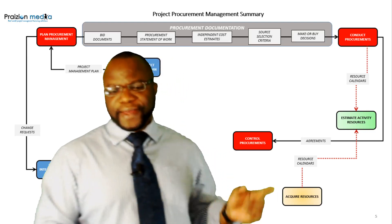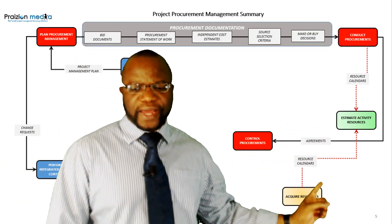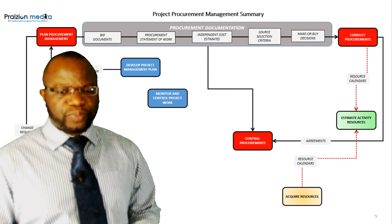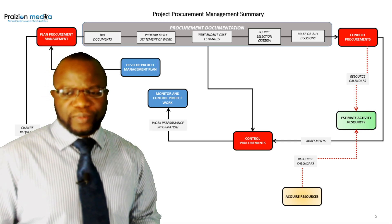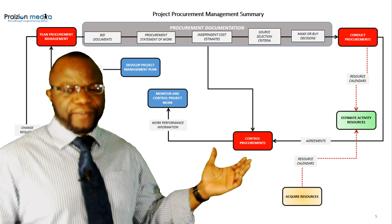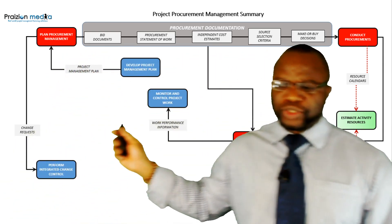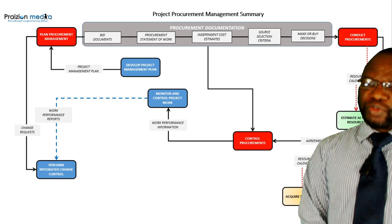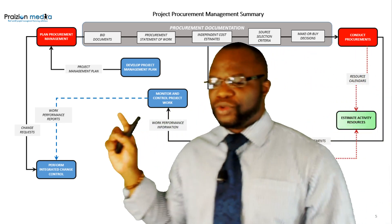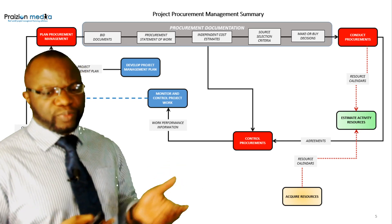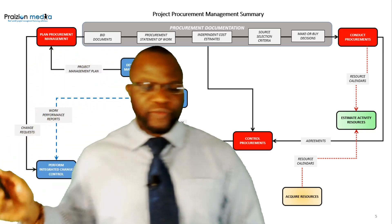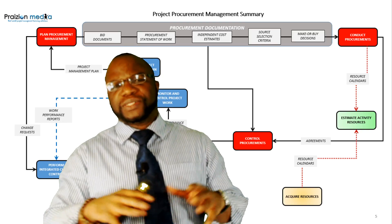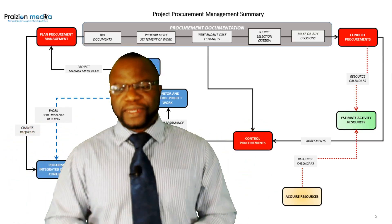From Control Procurements we get Work Performance Information, as we do from many other processes — WPI goes into Monitor and Control Project Work. We also have work performance reports coming from Monitor and Control Project Work; they go into Perform Integrated Change Control. So you can see work performance reports going into Perform Integrated Change Control — that's in a different knowledge area, but it's good to see in the bigger picture how all these things interconnect and flow.